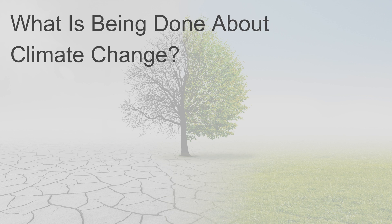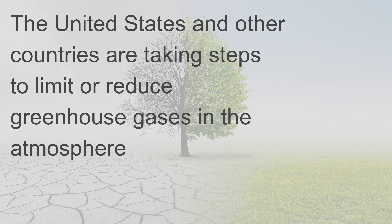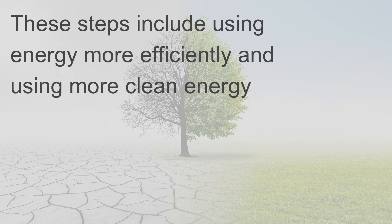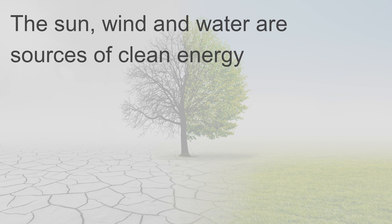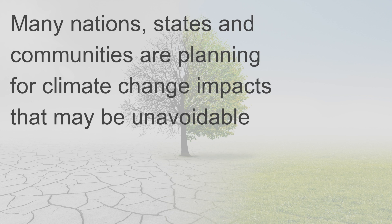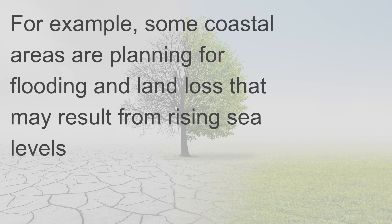What is being done about climate change? The United States and other countries are taking steps to limit or reduce greenhouse gases in the atmosphere. These steps include using energy more efficiently and using more clean energy — energy that puts less or no greenhouse gases into the atmosphere. The sun, wind, and water are sources of clean energy. Many nations, states, and communities are planning for climate change impacts that may be unavoidable, such as coastal areas planning for flooding and land loss from rising sea levels.